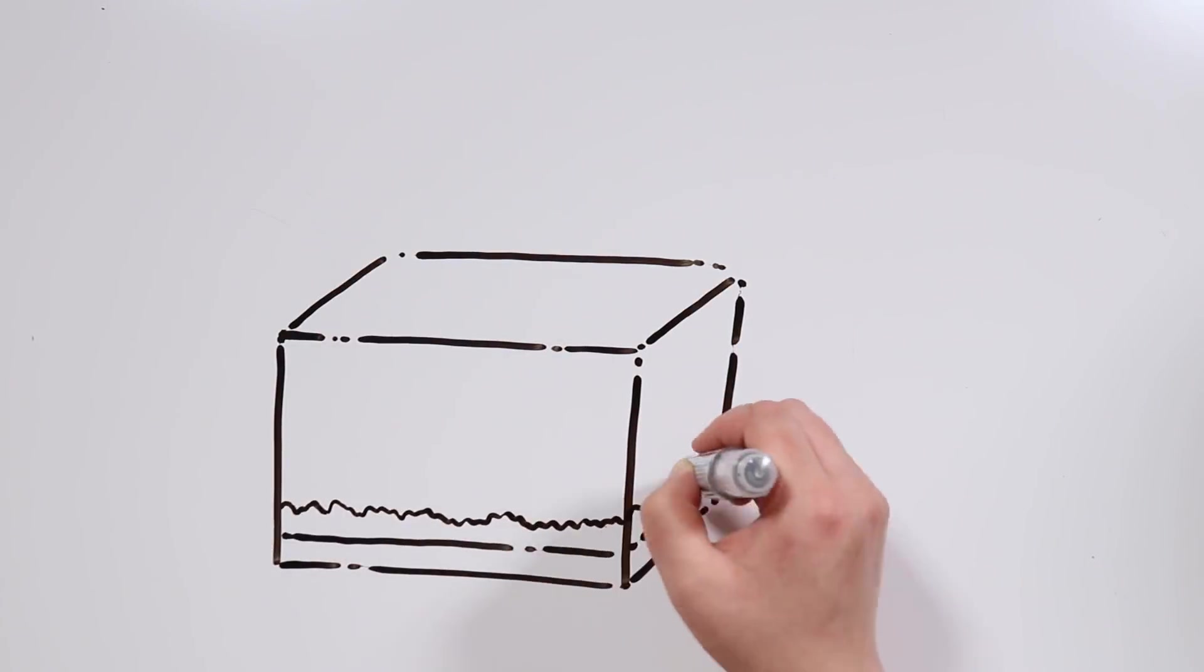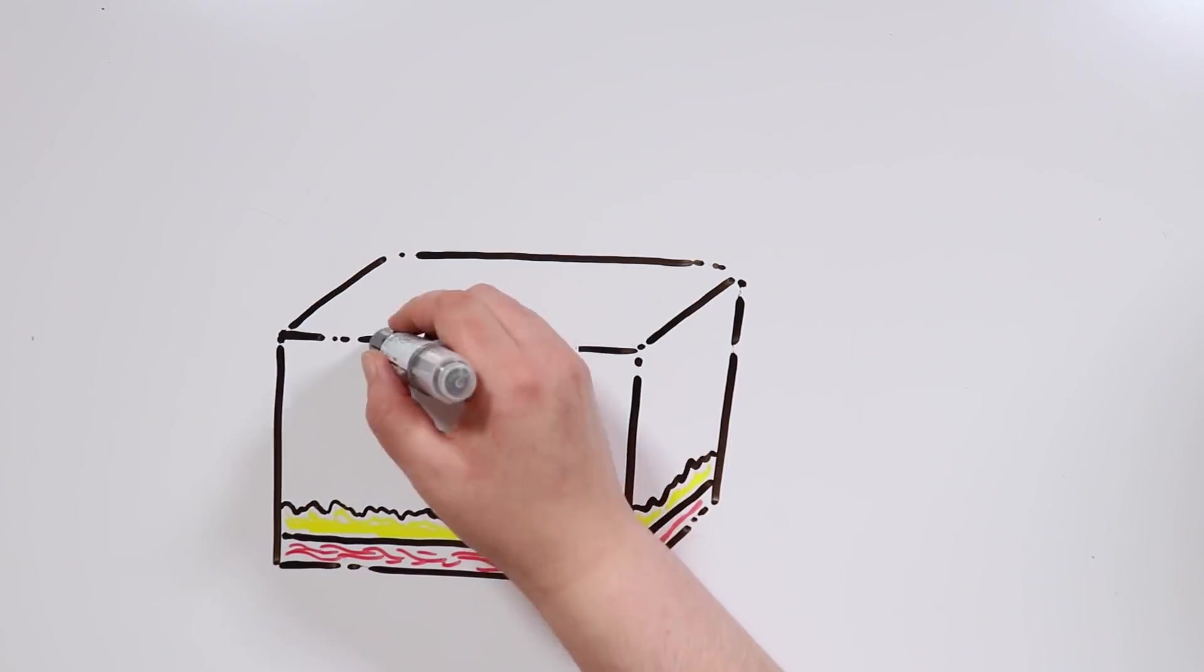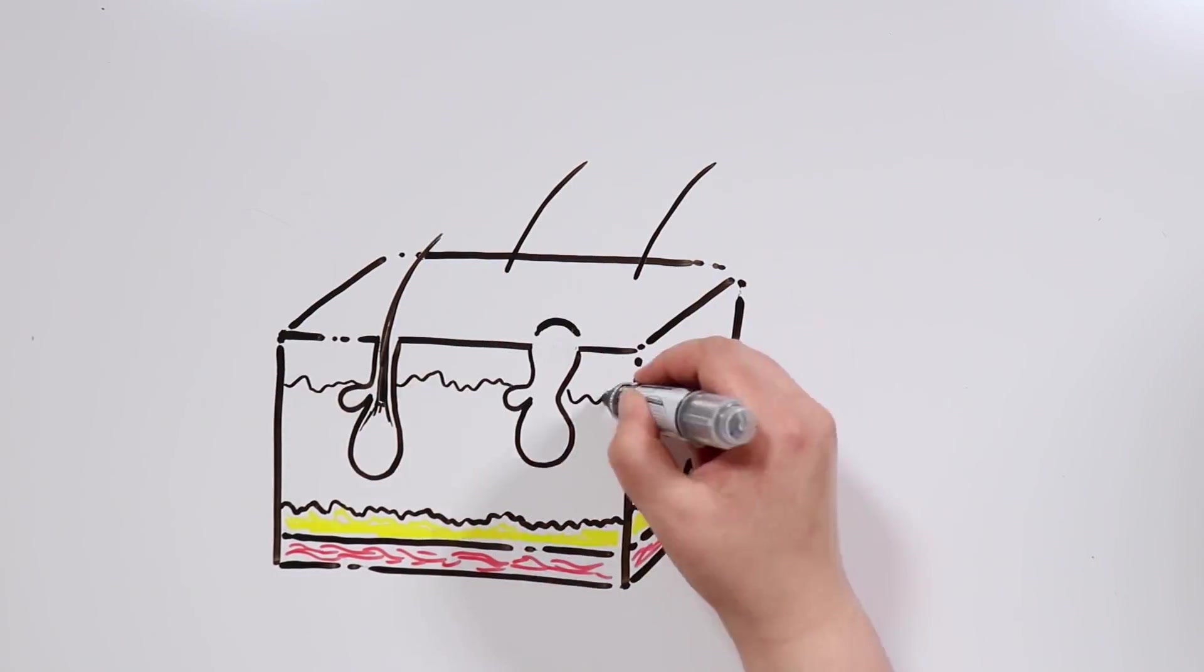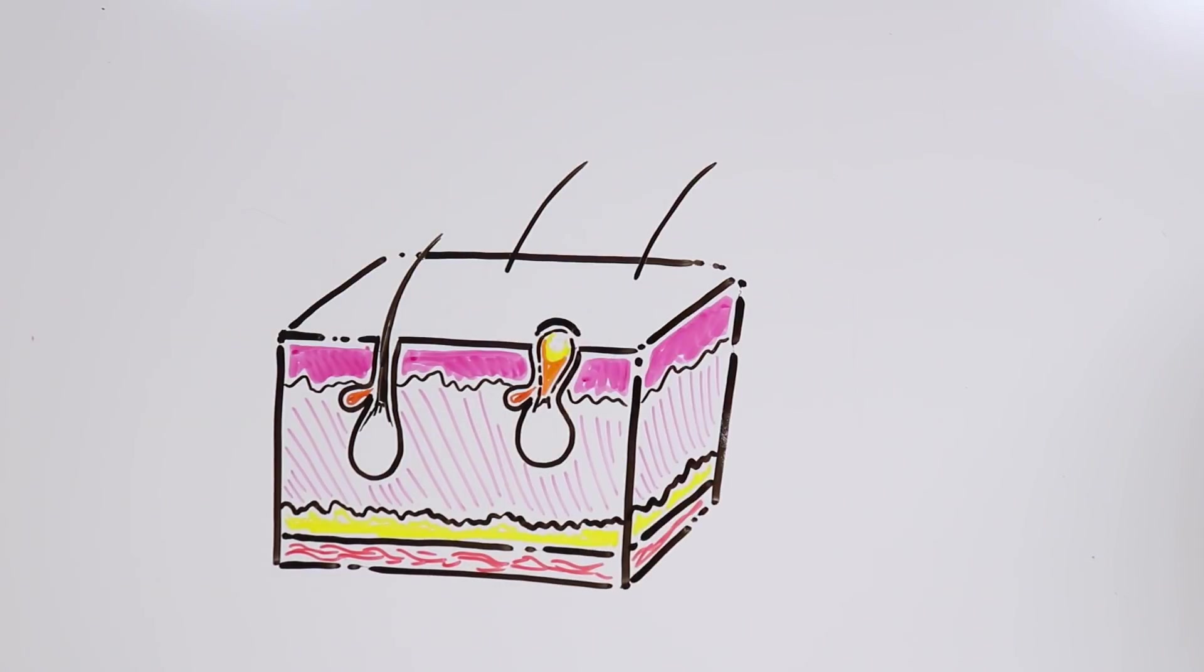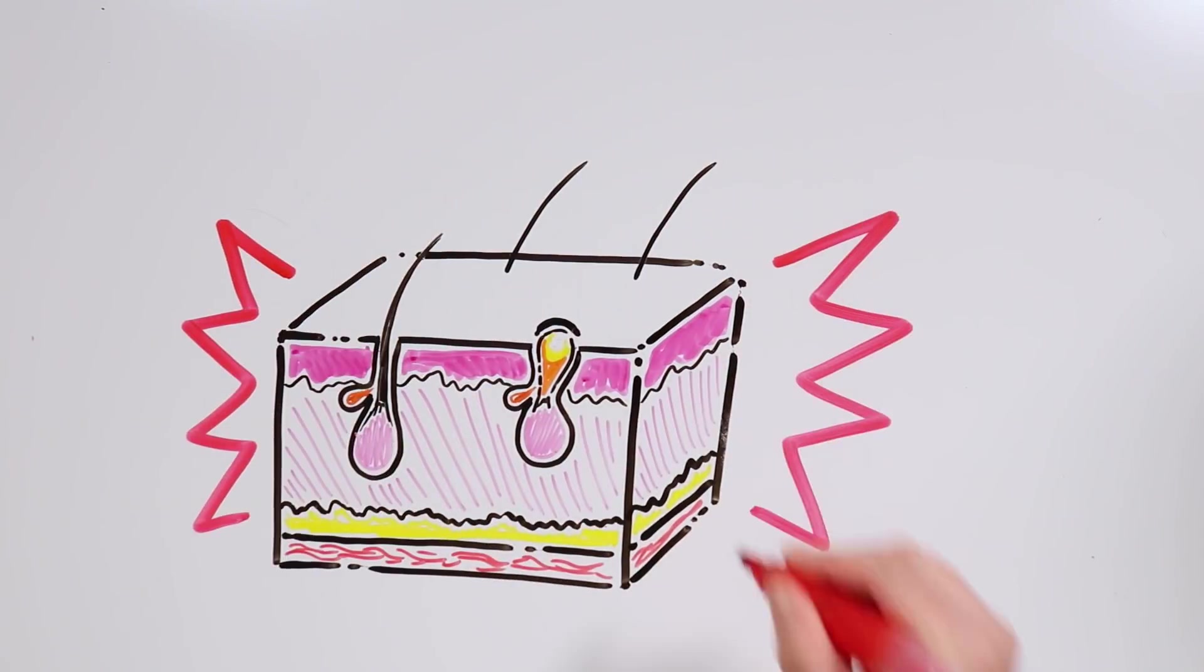When these glands produce excess oil, the pores can become obstructed, accumulating bacteria, filth, and inflammatory cells. That kind of obstruction is called a comedal. And that's when we get red and white pimples, whiteheads, and blackheads.